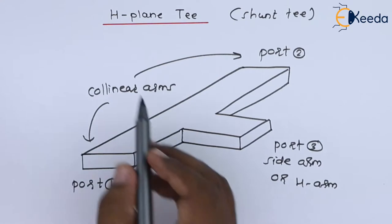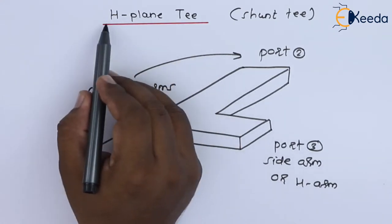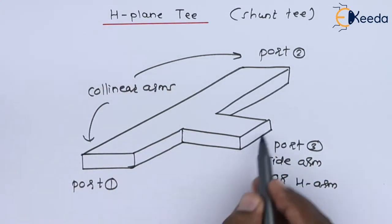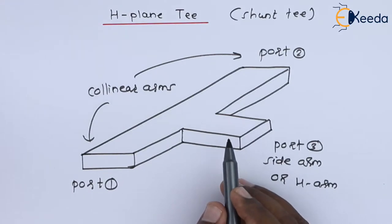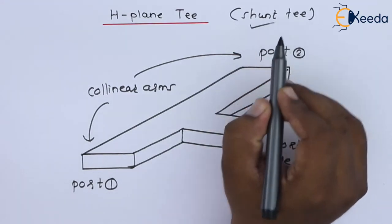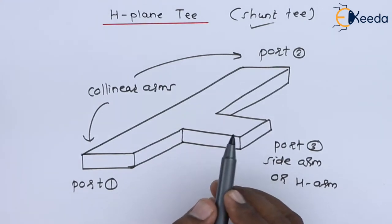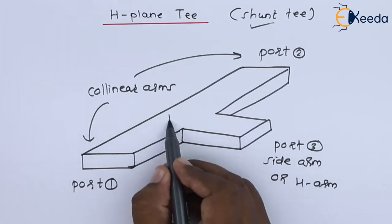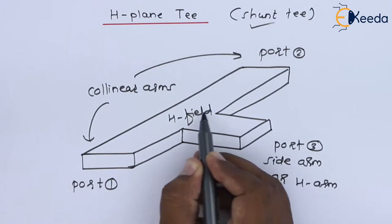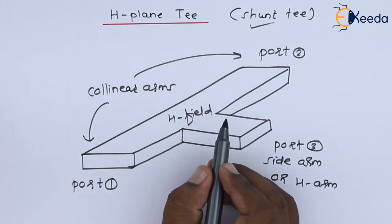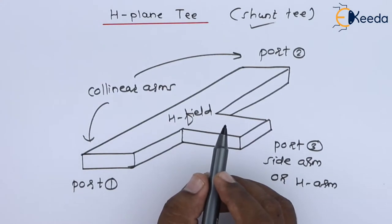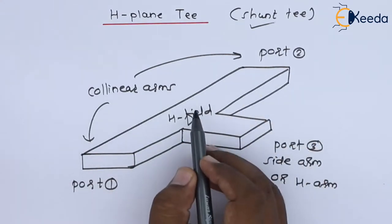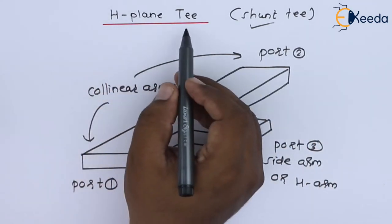Port number 3 is regarded as the side arm, also called the H-arm. The reason H-plane T is named so is that the axis of its side arm is shunting — hence the name shunt — relative to the electric field. In other words, the axis of the side arm is parallel to the H-field, the magnetic field intensity orientation vector, while the microwave signal propagates from port number 1 to port number 2 in the main waveguide. Hence the name H-plane T.